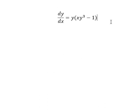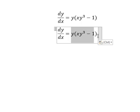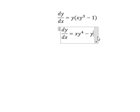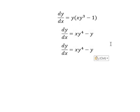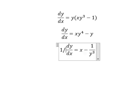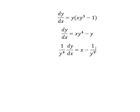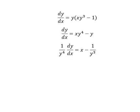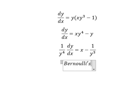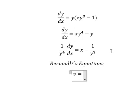Question number two. We multiply both sides by y, then we divide both sides by y to the power of 4. We can see that this is about Bernoulli equations, so I will put v equals to this one.